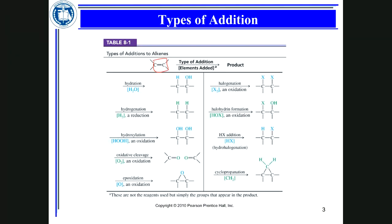Looking at the types of reactions: if you add water, you add H to one carbon and OH to another, and the product is an alcohol. This is hydration. For hydrogenation, alkene is the reactant, the reagent is hydrogen, you need a catalyst, and you get an alkane as product. For hydration, alkene is the reactant, the reagent is water, a catalyst is required, and the product is an alcohol.